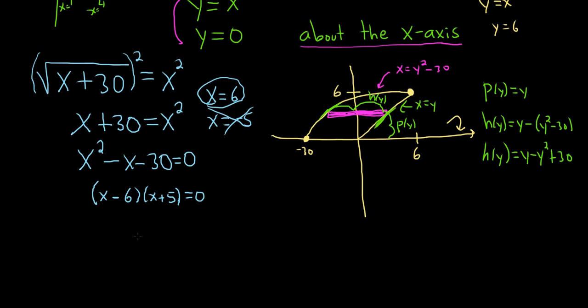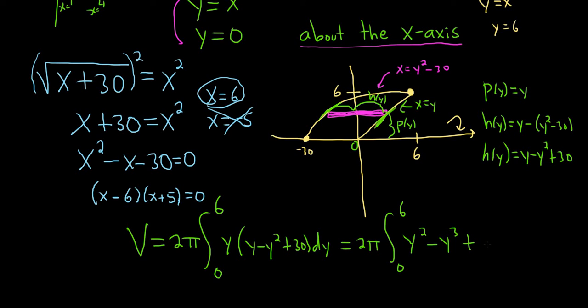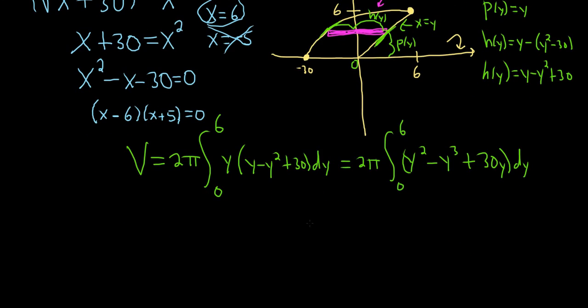Okay, let's go ahead and write down the integral that gives us the volume. So v. So the shell has the 2 pi. And we're integrating with respect to y, so we're going from 0 to 6, so from the bottom up. And it's p times h, so it's y times, and then y minus y squared plus 30, and then dy. So this is equal to 2 pi times the definite integral from 0 to 6. Let's go ahead and distribute that y, so y squared minus y cubed plus 30y. And then we have our dy here. Let's just double check that. y times y is y squared. y times y squared is y cubed. Everything looks good.